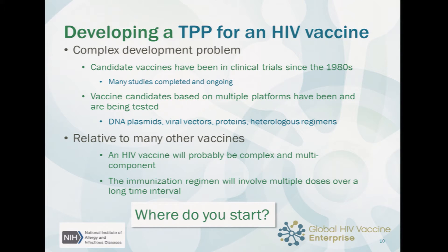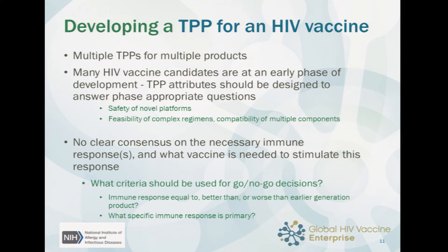There are a number of different candidates being tested, based on multiple platforms. These different candidates are often put together into heterologous regimens, which only increases the complexity of the problem. This also tends to result in immunization regimens that are very long and very complicated. So how should we approach developing a TPP for an HIV vaccine?